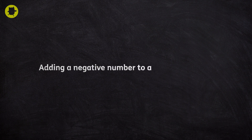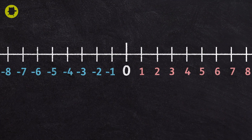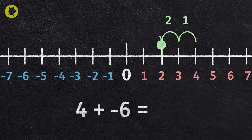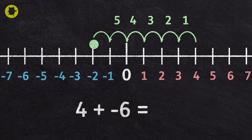To add a negative number to a positive number, we count back the value of the negative number. So to find out the answer to four add negative six, we mark positive four on the number line. To add negative six, we move six places in the negative direction, to the left of the number line. Four add negative six is negative two.